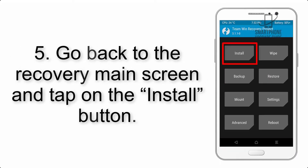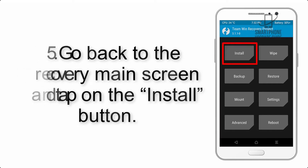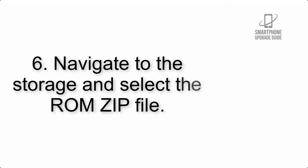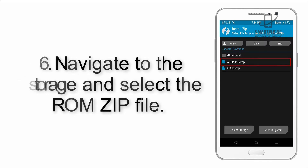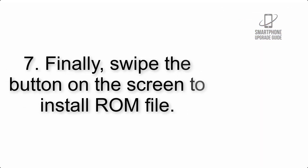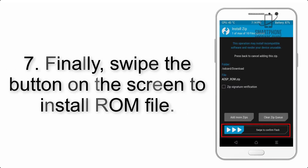Step 5: Go back to the recovery main screen and tap on the Install button. Step 6: Navigate to the storage and select the ROM zip file. Step 7: Finally, swipe the button on the screen to install the ROM file.